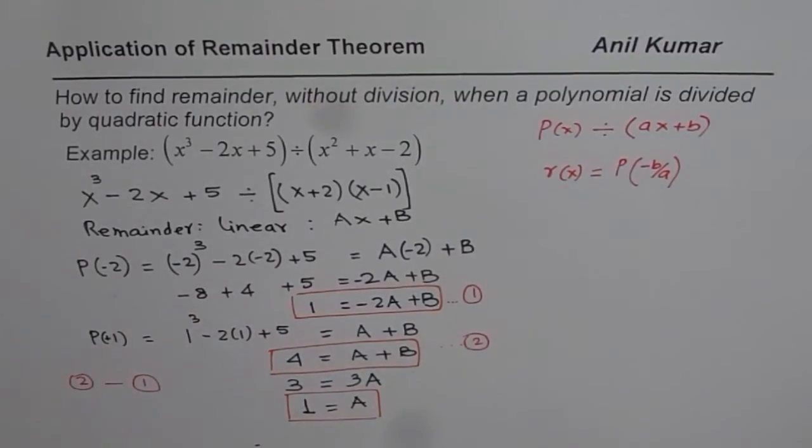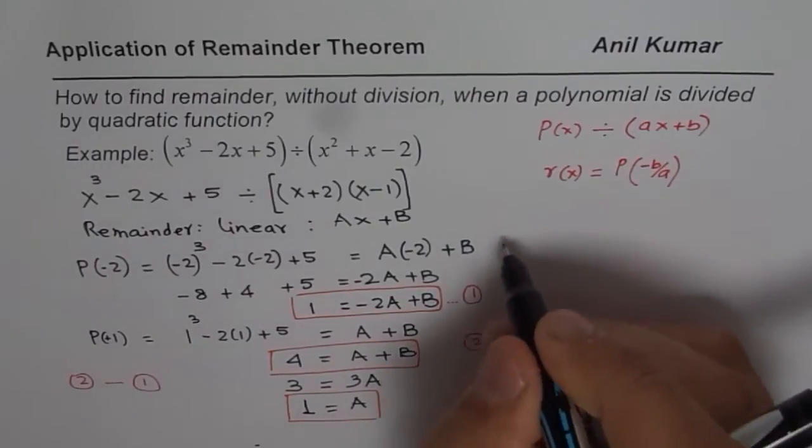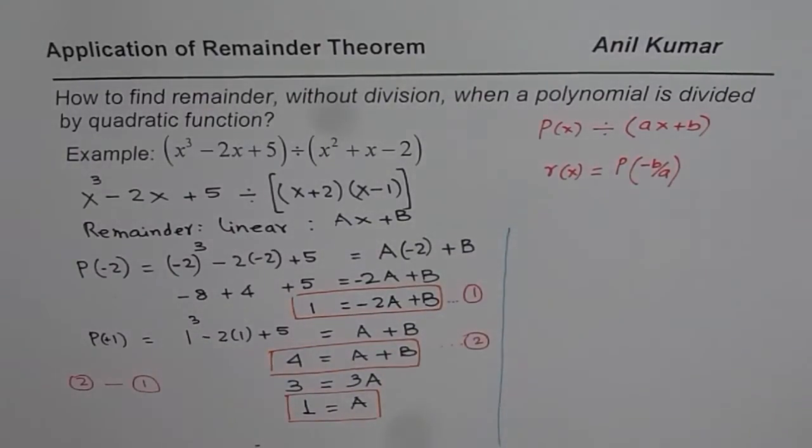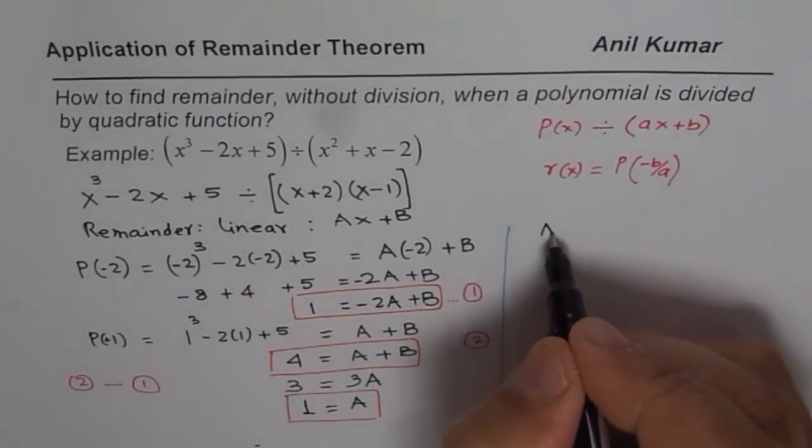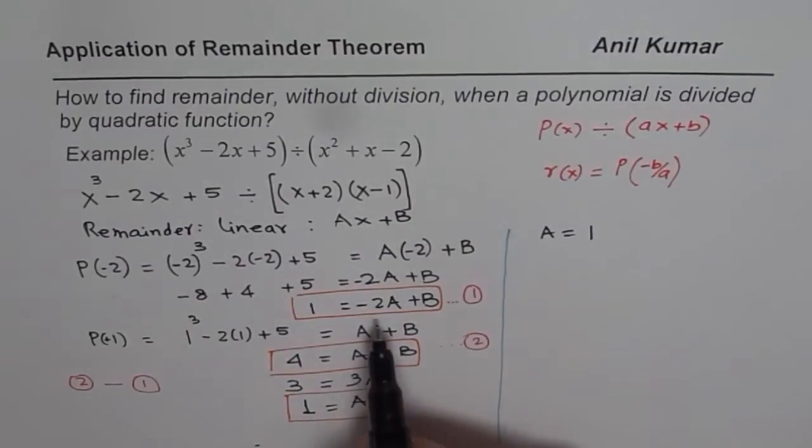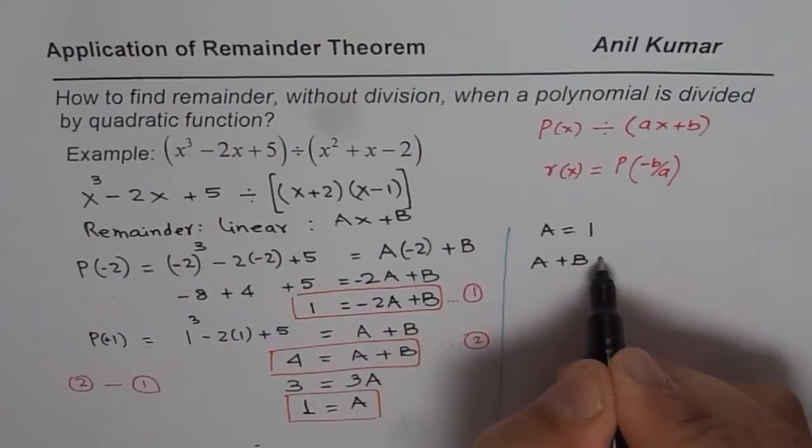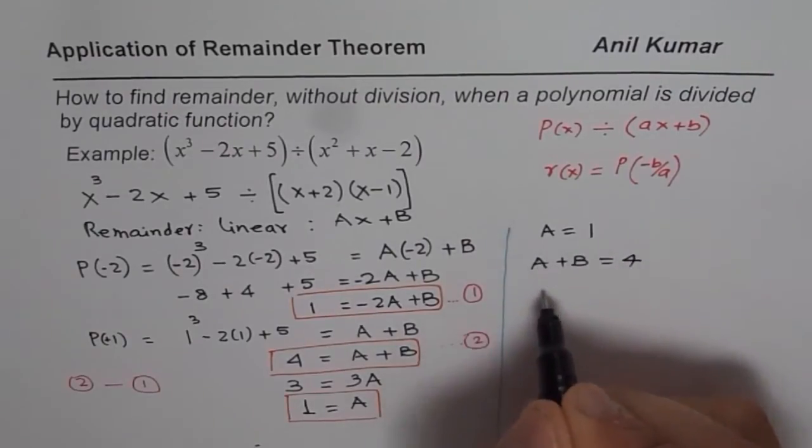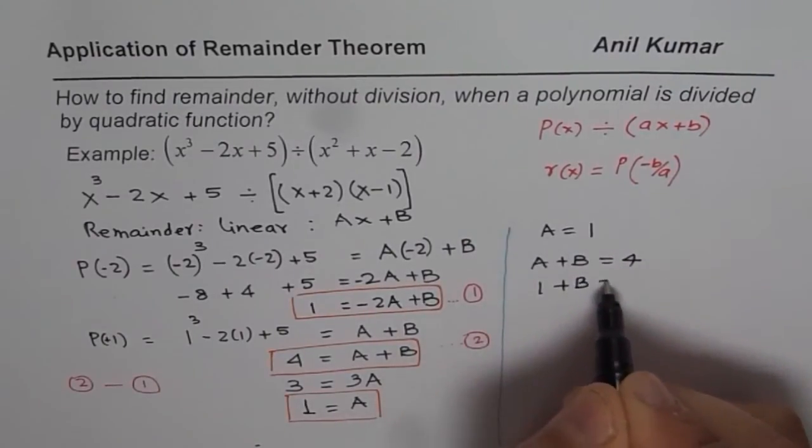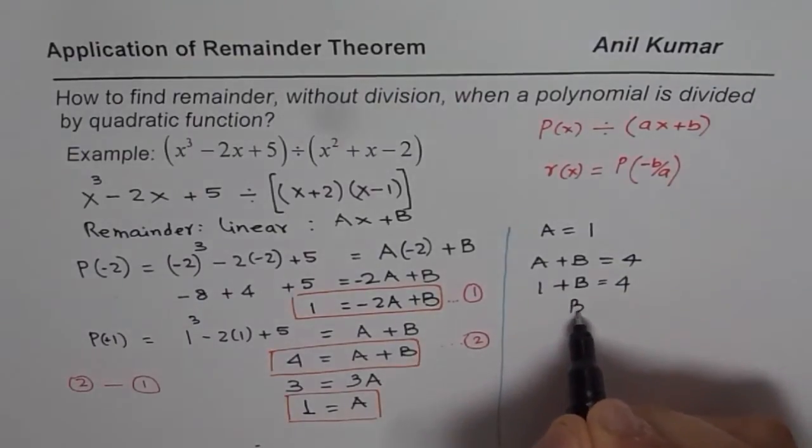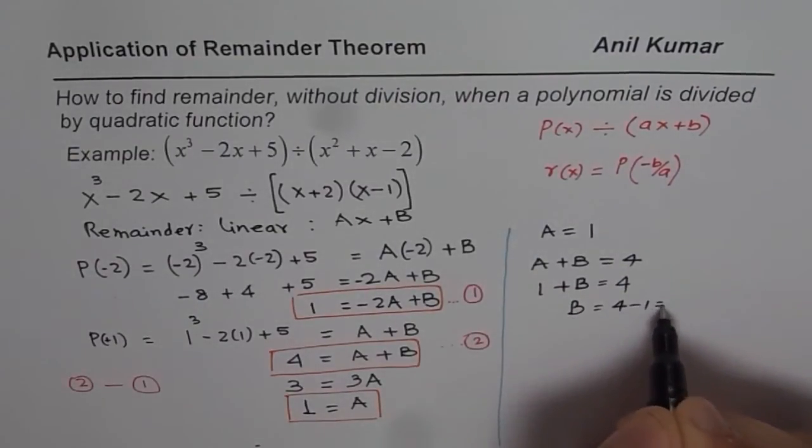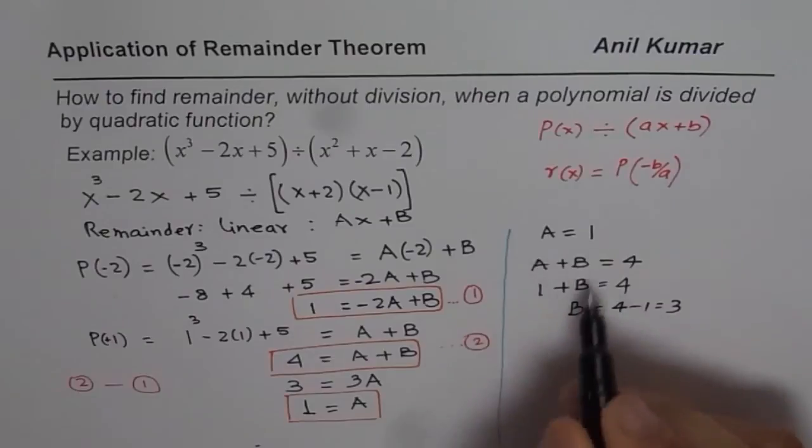Now we can find what B is. We know A equals 1. We can use one of these equations. A plus B equals 4. If I substitute 1 for A, I get B. From here we can say B equals 4 minus 1, which is 3.